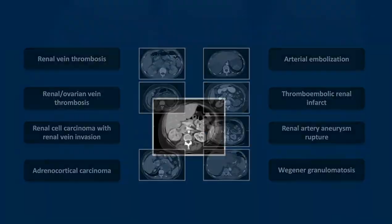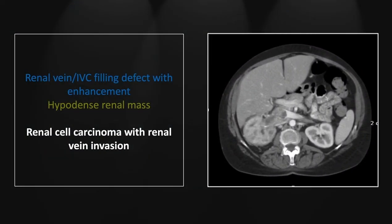Our next case is a renal cell carcinoma with renal vein invasion. Of course, the renal cell carcinoma is one of those classically angioinvasive tumors. You can see the filling defect here extending from the right renal vein into the IVC, and note specifically the contrast enhancement within that otherwise hypodense filling defect — pretty much classic appearance of tumor angioinvasion, clearly denoting a soft tissue component to that filling defect.